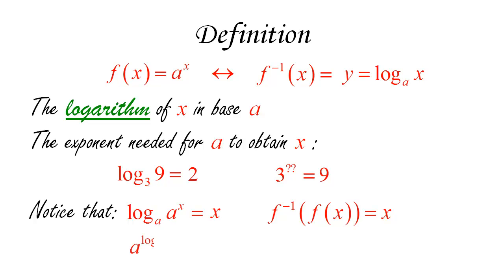The same thing happens in reverse: a raised to the exponent log base a of x equals x. We're raising a to the number to which we need to raise a in order to get x — so we get x. This is the special case of composing a function and its inverse in the other order. In other words, log and exponentials can be cancelled: log base a of a to the x equals x, and a raised to log base a of x equals x.